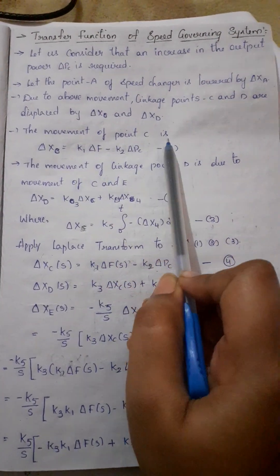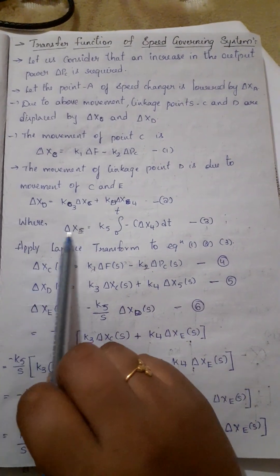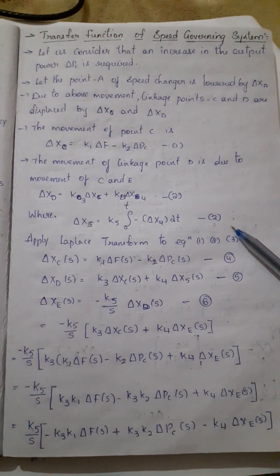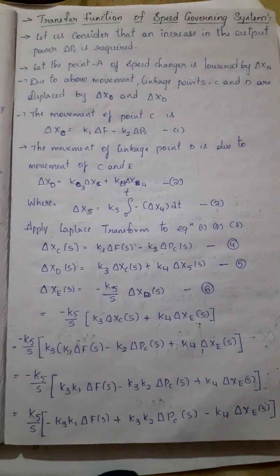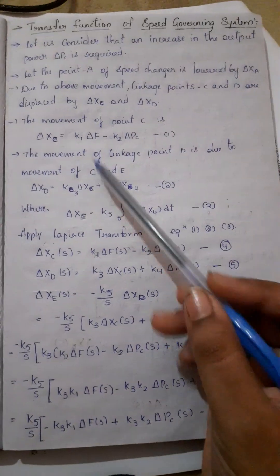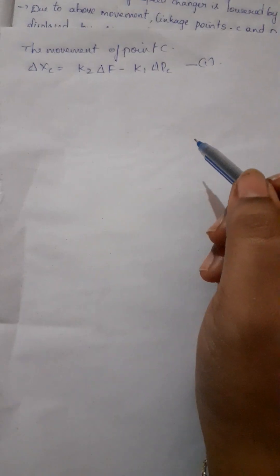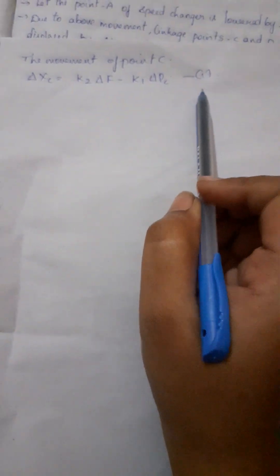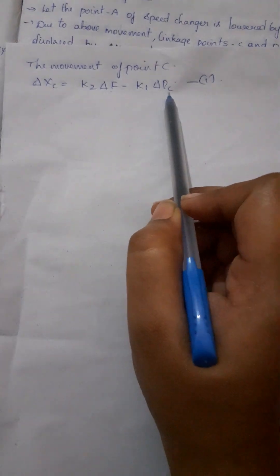We have: first, the moment of point C; the moment of point D; and finally the moment of point E. With these three equations — equation 1, 2, and 3 — we have to derive the transfer function. So here we consider the moment of point C.